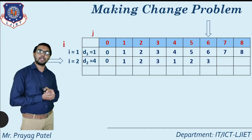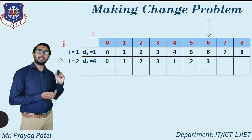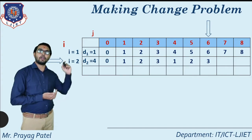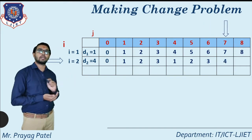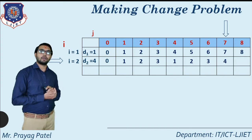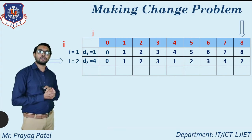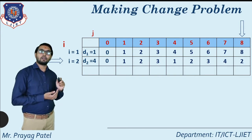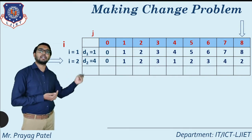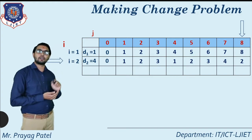C[2][6]: coins of denomination 1 and 4 are available, and we want to pay for 6. We select 1 coin of denomination 4 and 2 coins of denomination 1, so total coins equal 3. Location C[2][7]: total coins required equal 4, because 1 coin of denomination 4 and 3 coins of denomination 1 are selected. Last location C[2][8] equals 2: for making change of 8, one way is 8 coins of denomination 1, another is 2 coins of denomination 4, and another is 1 coin of denomination 4 and 4 coins of denomination 1. The minimum is 2, so we use 2 coins of denomination 4.